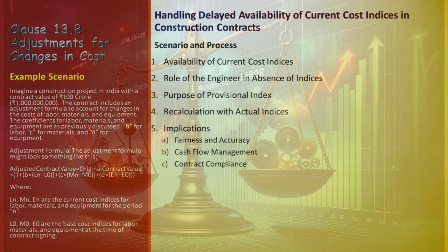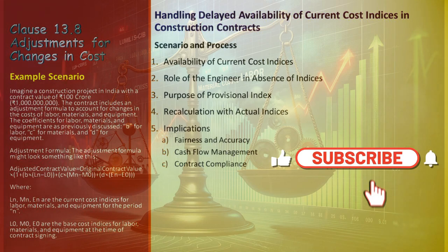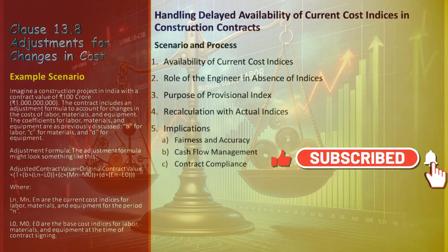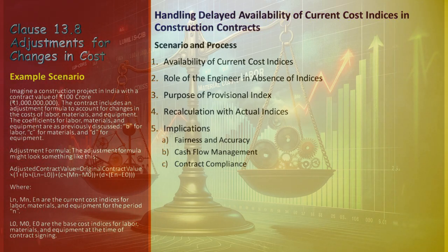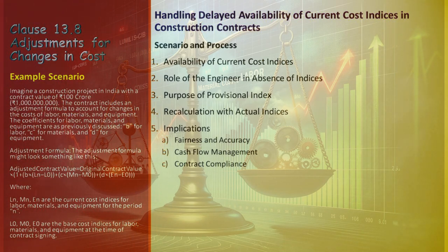In a project in India, due to a delay in cost indices, the engineer sets provisional indices for labor (112) and materials (118) for use in interim payments. Two months later, the actual indices are published as labor = 110 and materials = 120. The engineer then recalculates the previous adjustments using these actual indices, ensuring the payments accurately reflect the true market conditions.